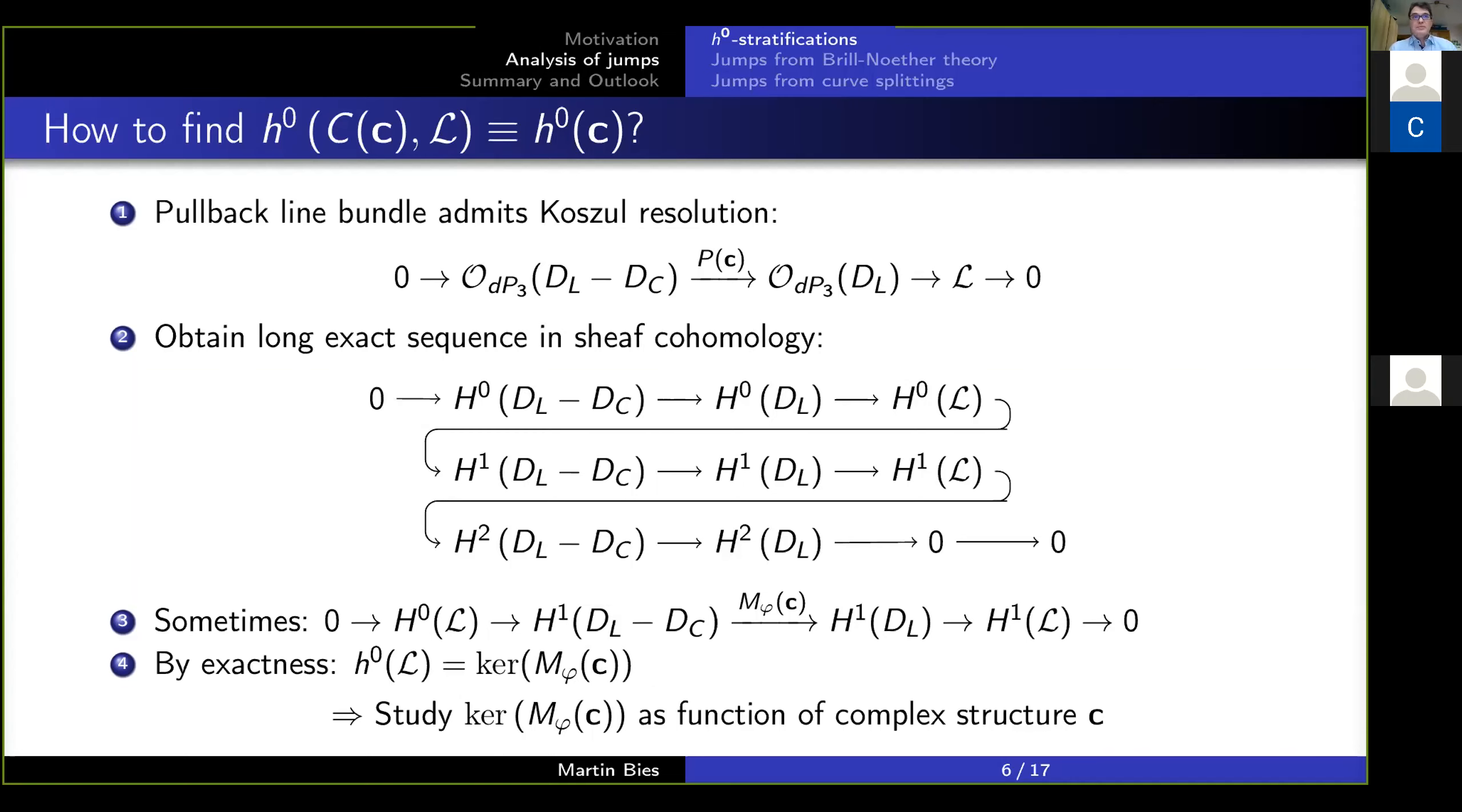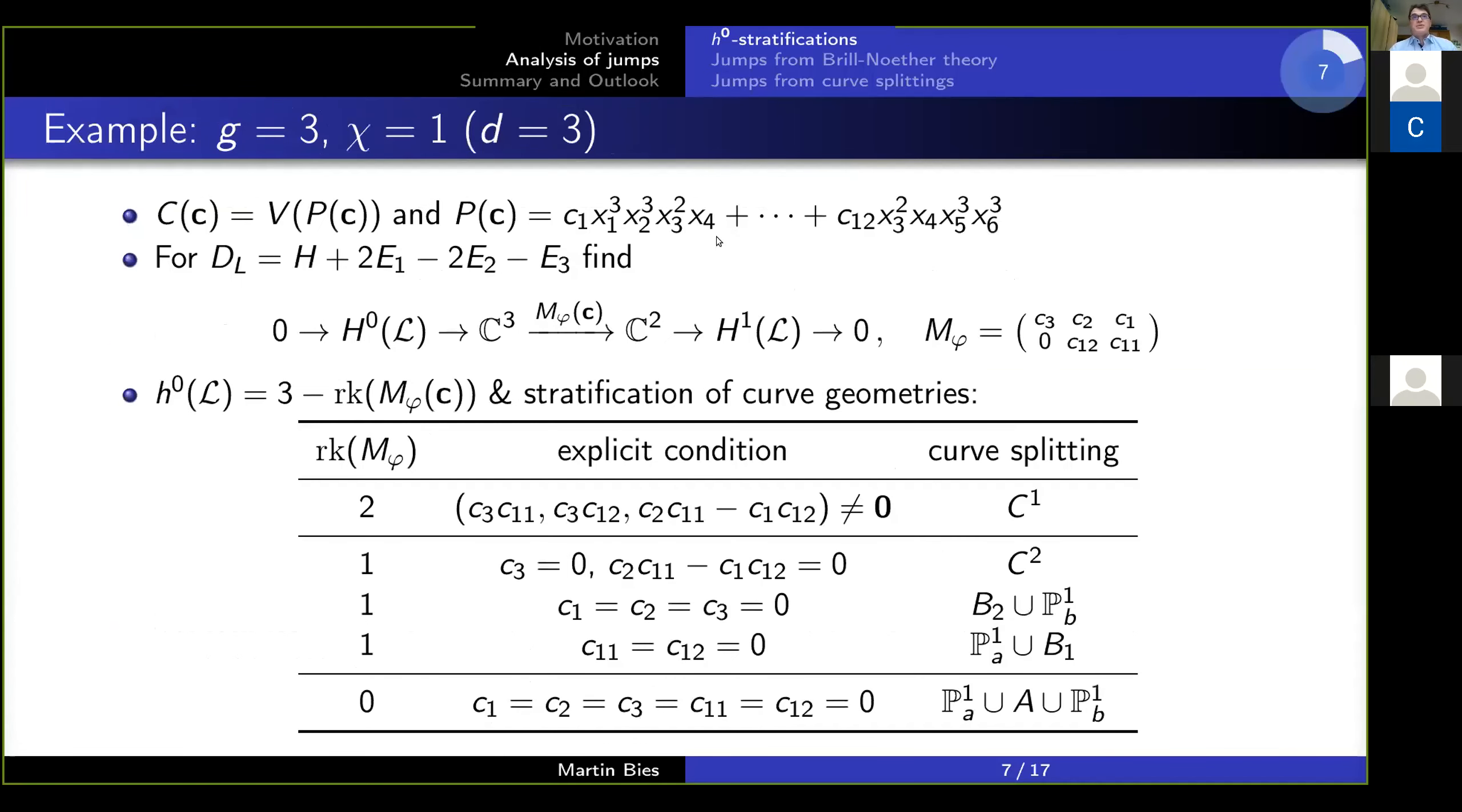More explicitly, let me take a specific example, where I'm taking this polynomial here to define the curve in question. I take some specific line bundle, and the sequence then turns out to be this one here. I have a mapping that takes me from a three-dimensional to a two-dimensional vector space, and the mapping in the green, once the dust has settled, turns out to be given in this shape here.